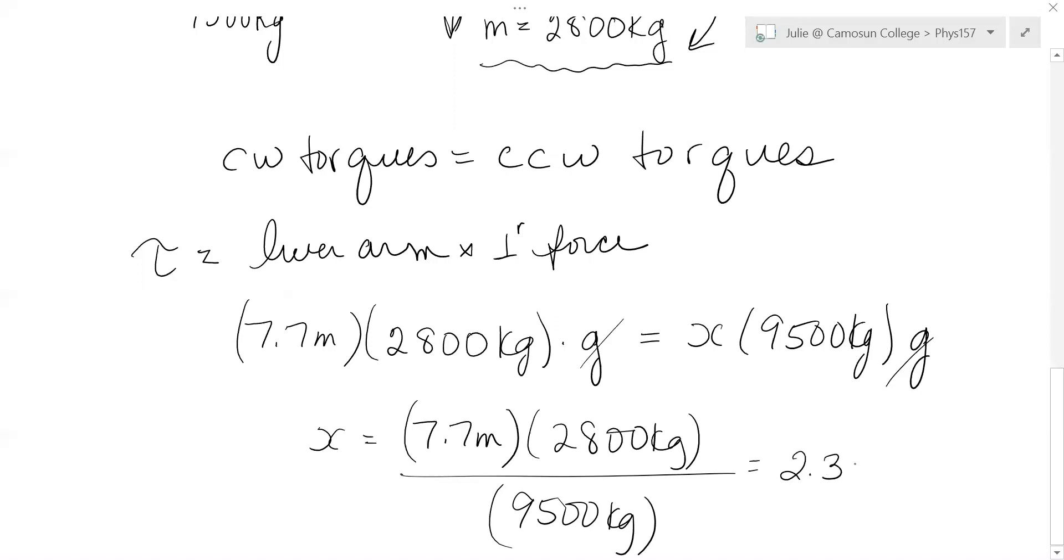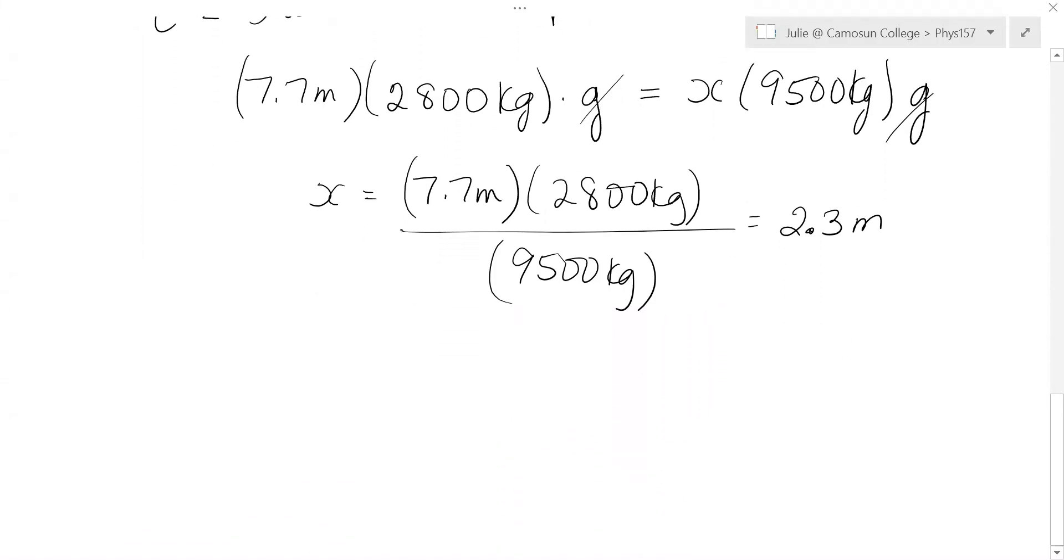And that comes out in meters. And the answer to that is 2.3 meters. So it only has to be 2.3 meters away from that pivot to balance because it's a much bigger counterweight than the load.